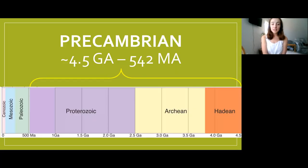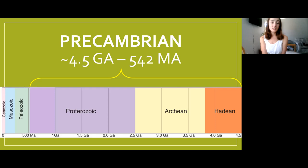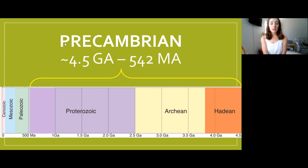First, I just want to point out when the Precambrian was. The Precambrian probably marks the earliest time in Earth's history. It went from around 4.5 billion years ago — that's what GA means — to about 542 million years ago, or MA, which is when the Paleozoic began. It includes the eras Hadean, Archean, and Proterozoic.